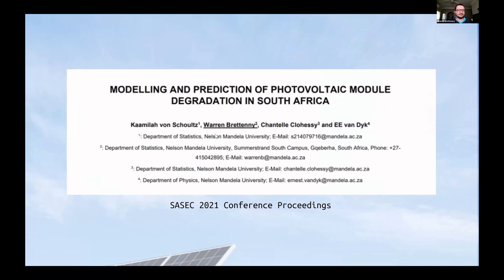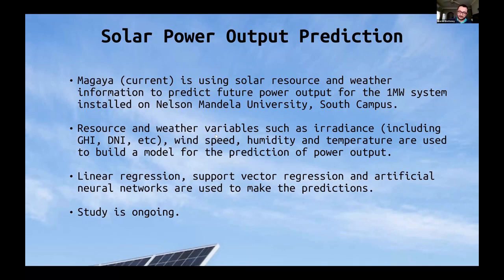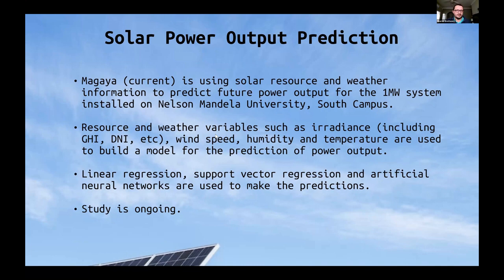Something currently going, Piwe, one of our master's students, uses solar resource and weather information to predict future power output for our one megawatt system. We've got a big solar installation on our south campus, and we want to predict what kind of energy this is going to produce using environmental, solar resource, and weather variables. Using wind speed, humidity, temperature, irradiance measures, we want to predict what kind of power output we can get. The methods being investigated are support vector regression, artificial neural networks, and linear regression. This study is ongoing, and Piwe is in the room, so he will happily answer questions.